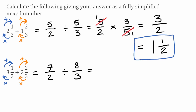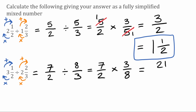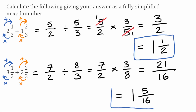To do seven over two divided by eight over three, we use the keep flip change method — keep the seven over two, flip eight over three to become three over eight, then change the division to a multiply. So we've got seven over two multiplied by three over eight. Looking across: seven and eight can't be cancelled, and two and three can't be cancelled either. Multiplying across: seven multiplied by three gives 21, and two multiplied by eight gives 16. Converting 21 over 16 to a mixed number — 16 fits into 21 one full time with a remainder of five — so the answer is one and five sixteenths.